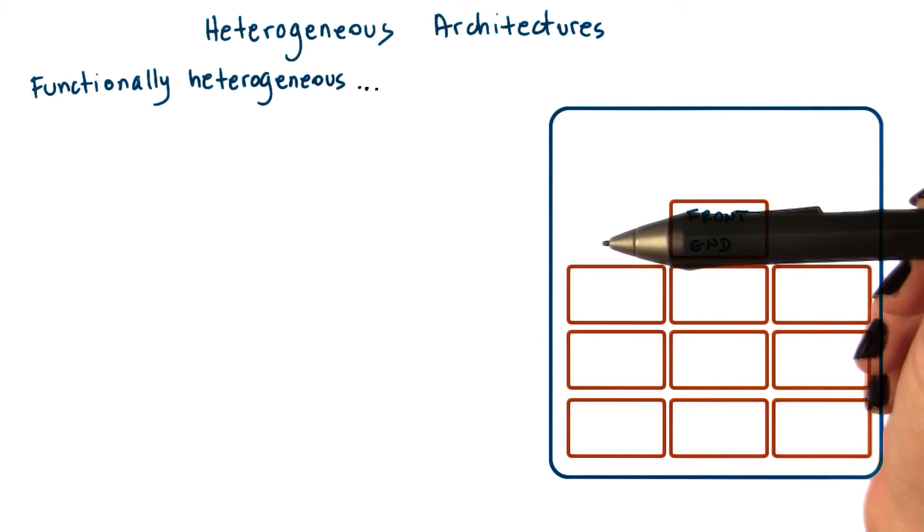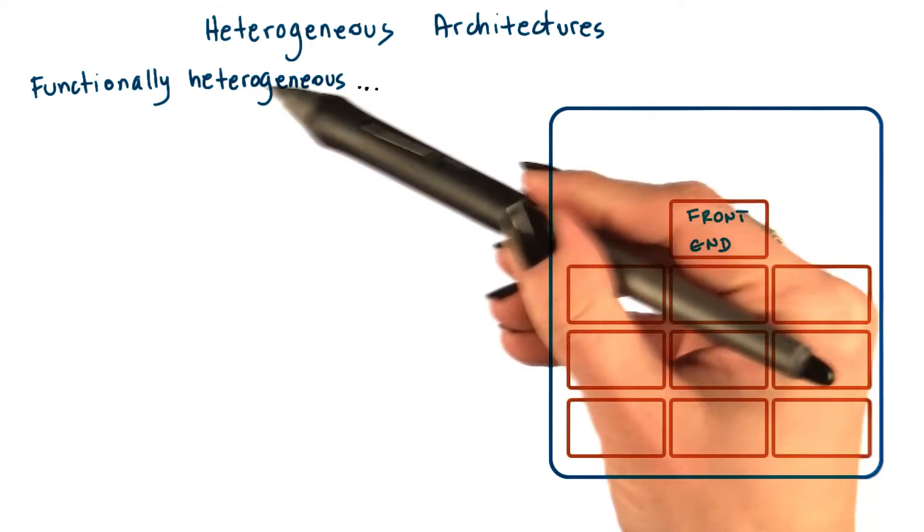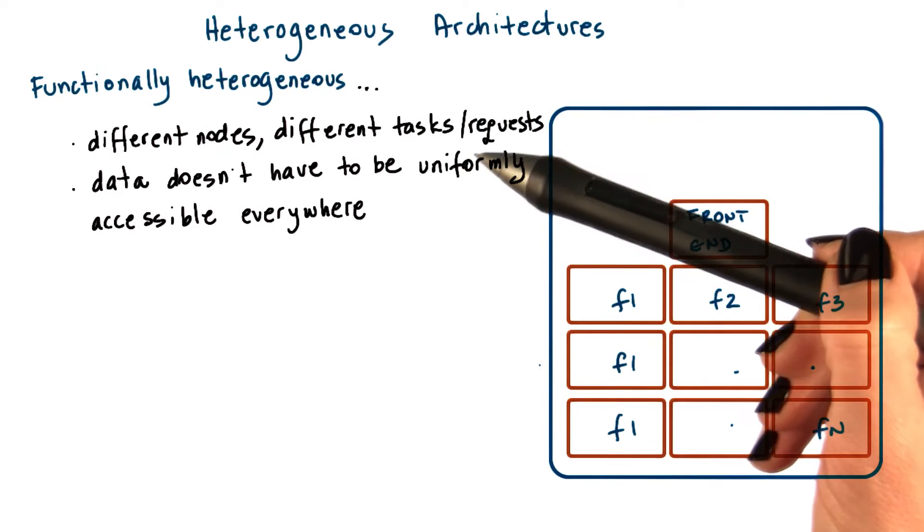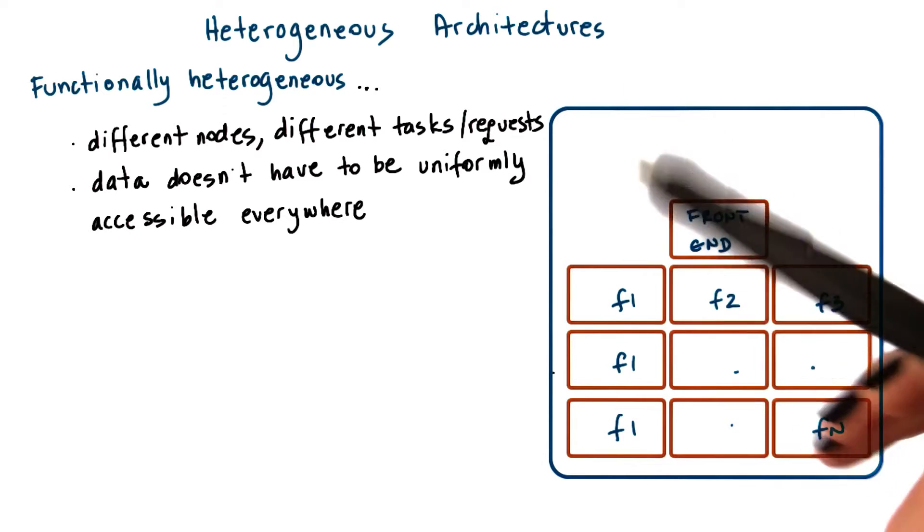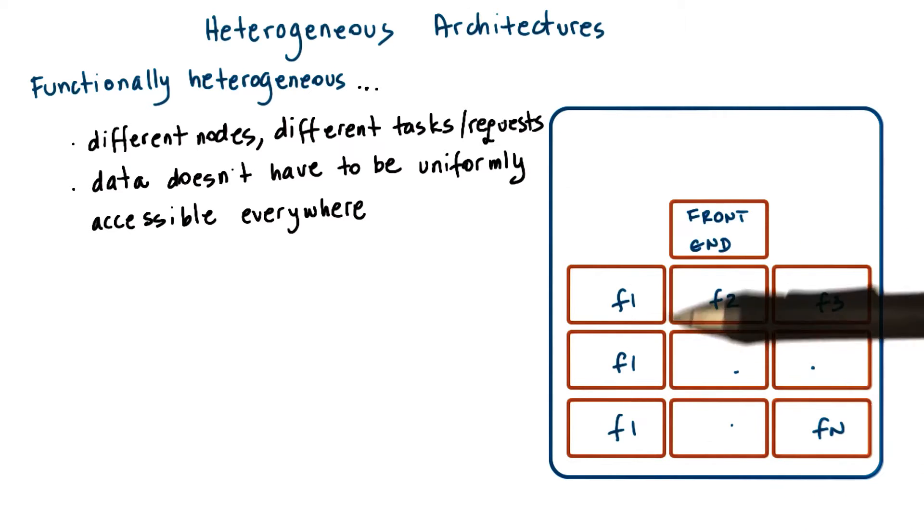The second common architecture for internet services is referred to as functionally heterogeneous. In these kinds of architectures, different nodes are designated to perform certain functions or even to handle particular types of requests.